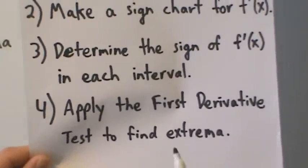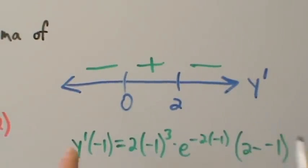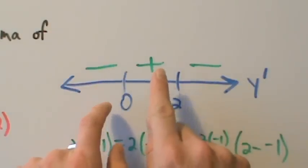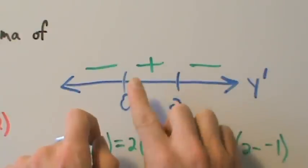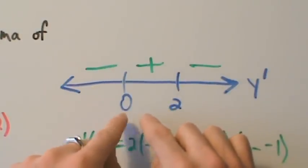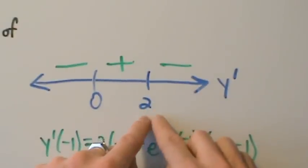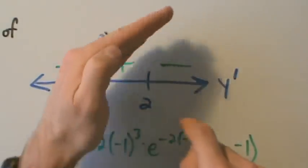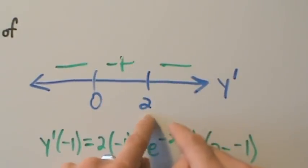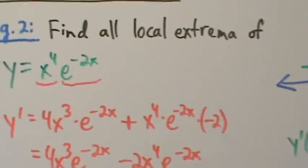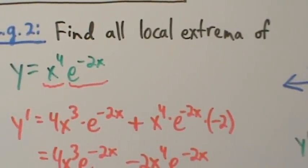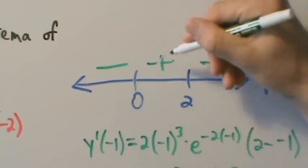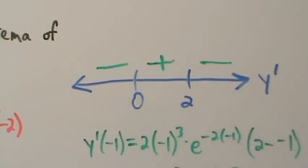Step 4: apply the first derivative test to find the extrema. Y prime is negative before x equals 0 and positive after, so the function decreases then increases — meaning there is a local minimum at x equals 0. Y prime is positive before x equals 2 and negative after, so the function increases then decreases — meaning there is a local maximum at x equals 2.